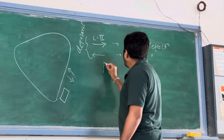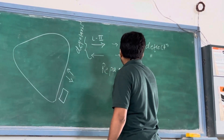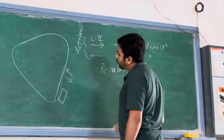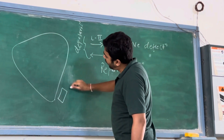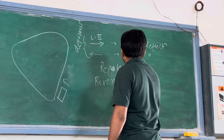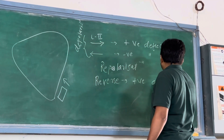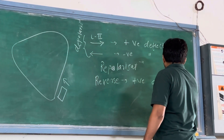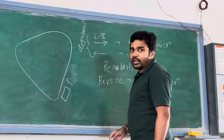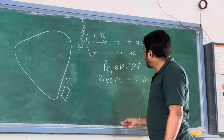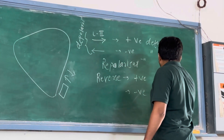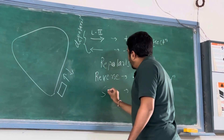Now in terms of repolarization, it will be the reverse. So if repolarization is in the reverse direction of the lead, it will give positive deflection. And if repolarization is in the same direction of the lead, it will give negative deflection.